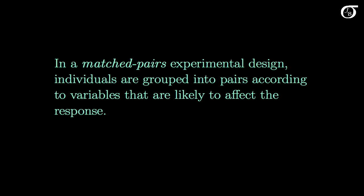Let's look at one other common situation before we look at how we might analyze this type of data. In a matched pairs experimental design, individuals are grouped into pairs according to variables that are likely to affect the response. For example, they might be matched according to age, or gender, or weight, or stage of a disease, or a variety of other possible variables.